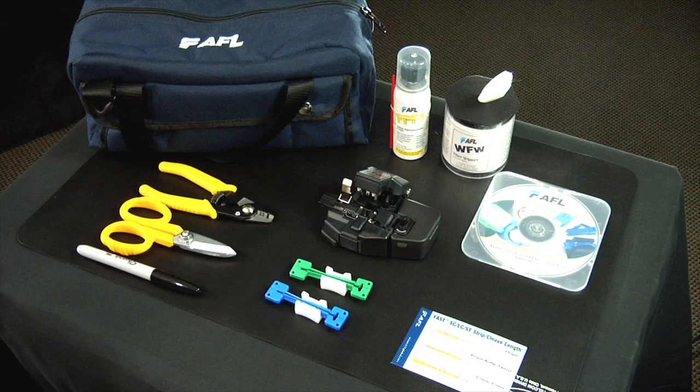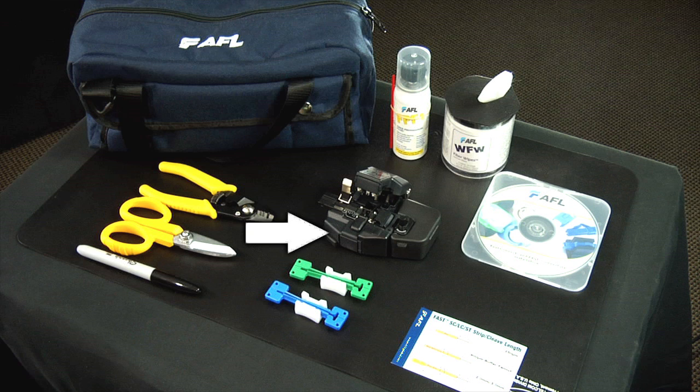The Fast Connector Toolkit contains the following items: the CT30A universal cleaver, a three-millimeter cable clamp and a two-millimeter cable clamp, a strip template, an instructional CD-ROM, a fiber stripper, Kevlar scissors, lint-free cloth wipes, fiber prep fluid, a marker pen, and the carrying case.